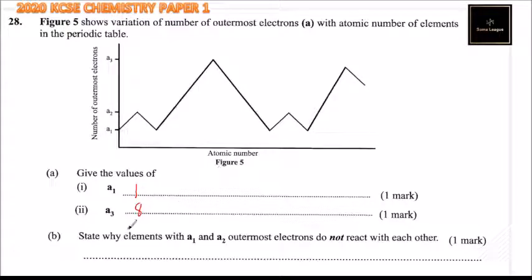Part B, that is one electron in the outermost level. This A3 is 8. State why elements with A1 and A2 outermost electrons do not react with each other.